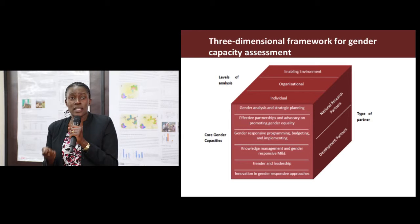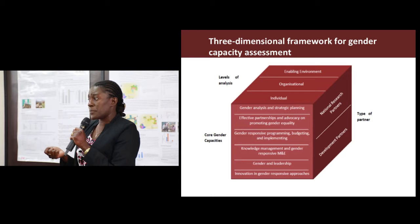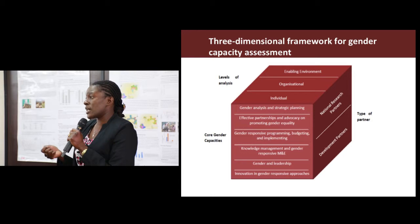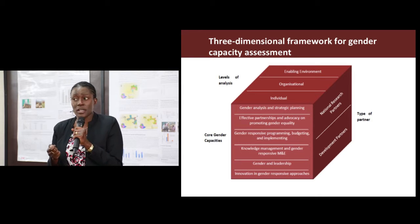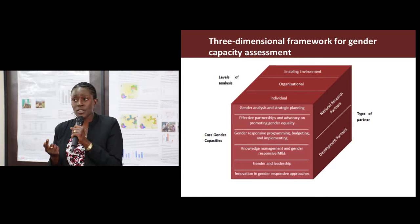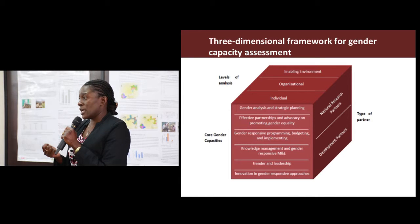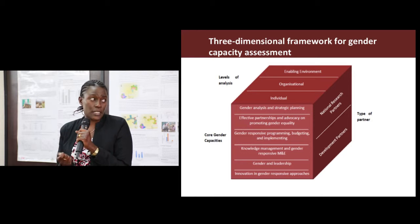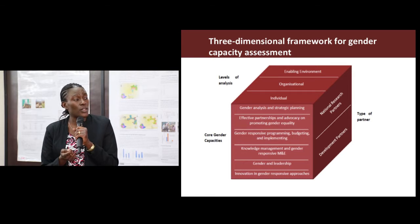What this tool basically does is help you identify the current levels of capacities, which you measure against the desired levels. It's a three-dimensional framework that we drill on. This framework first assesses the core gender capacities — the capacities we thought were very key for an organisation or an individual to be able to deliver on the gender mandate. There are three levels of analysis which I'll walk through later on, and we have key partners whose capacities we mostly assess, including development partners and national research partners.